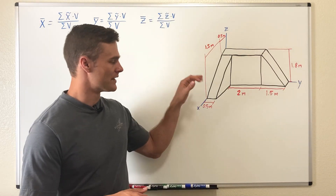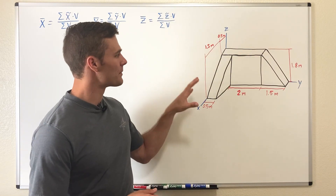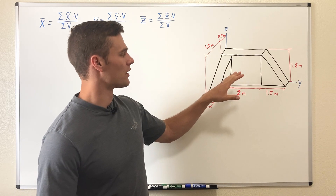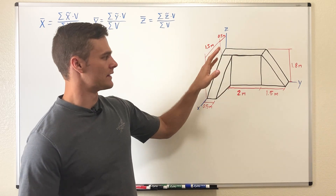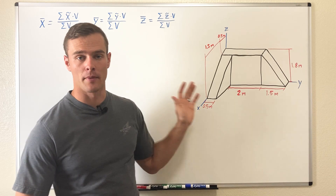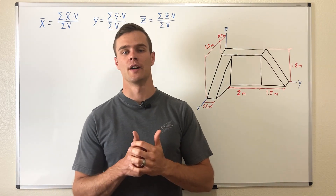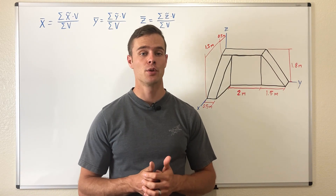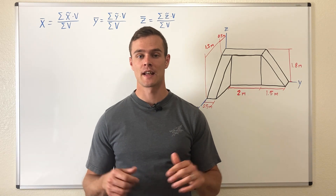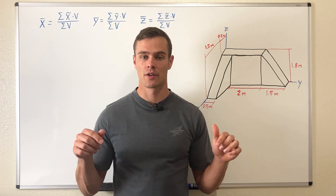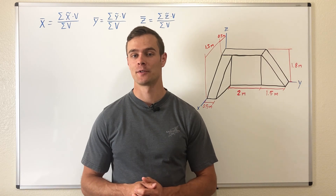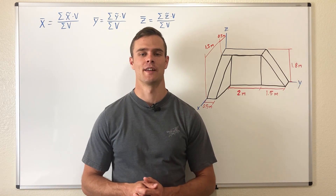What we have here is a three-dimensional object composed of different parts, each part having the same density — in other words, it's homogeneous throughout. What we need to do is find its centroid. I've got the steps we're going to go through written out in the description. If you find this video helpful, hit the like button and please subscribe.